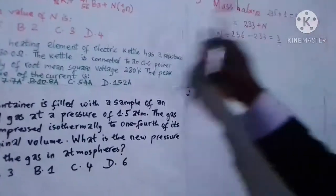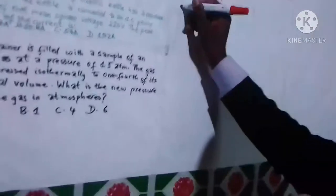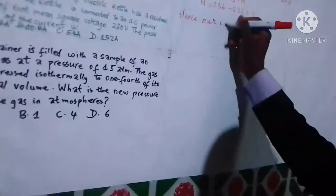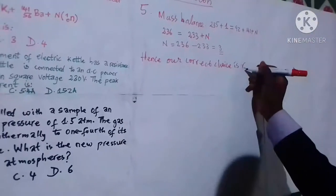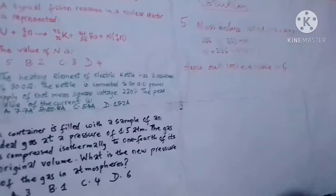So n is 3, and if we look at the four choices we have here, the correct answer is C. Our correct choice is C. That is the solution to question number five. Let's look at the solution to question number six.